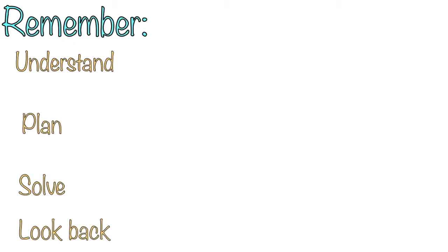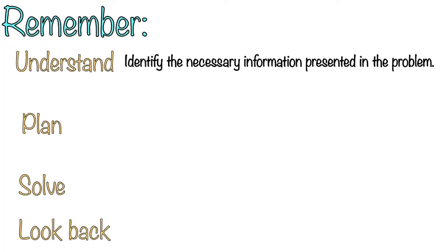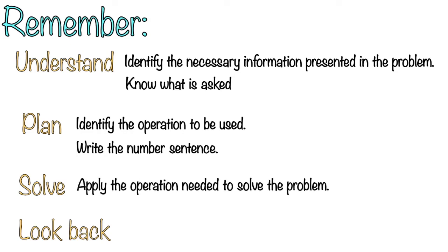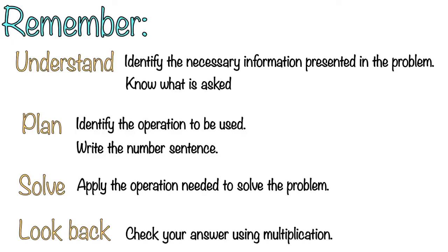Always remember, children, in solving word problems, we need to follow these steps: understand, plan, solve, and look back. For understand, identify the necessary information in the problem and know what is being asked. For plan, identify the operation and write the number sentence. For solve, apply the operation. For look back, check your answer using multiplication — multiply the divisor and the quotient, and the product should equal the dividend. That's all for today. Thank you for watching! See you next time.